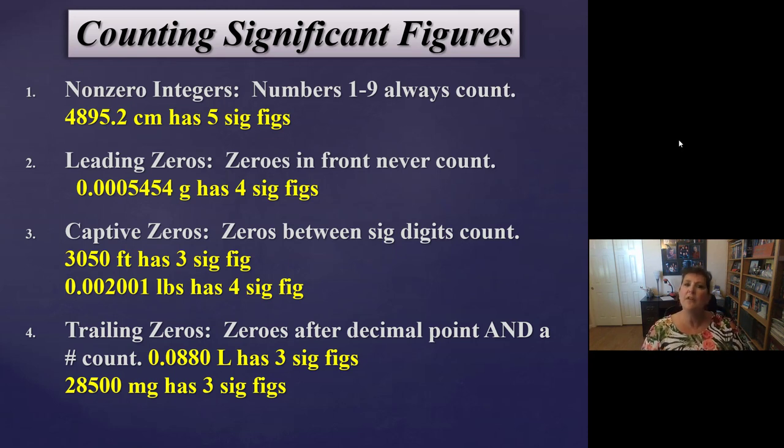So what's left to talk about? Well, the zeros. Zeros are a pain. I'm sorry, GCC, but zeros can be a pain. Let's talk about the zeros in the next rules. Number two, leading zeros, the ones in front, like 0.00. Those zeros never count. Okay, zeros in front never count. So 0.0005454. Only the 5454 counts. So it has four sig figs. Zeros in front never count.